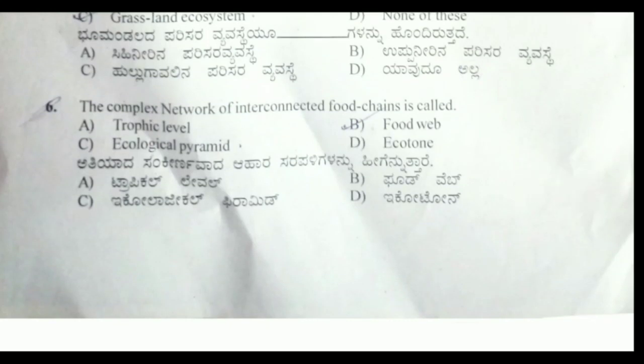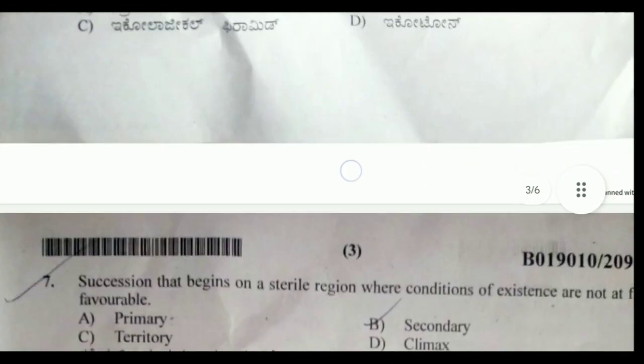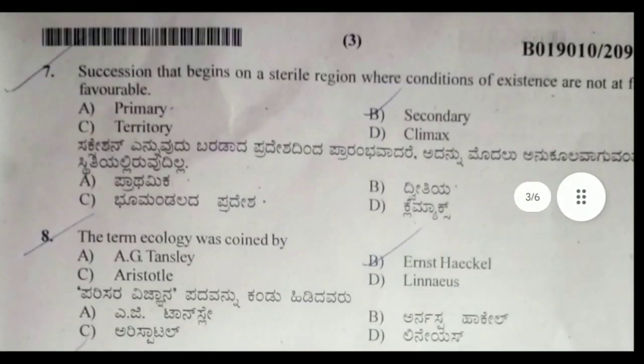Sixth question: the complex network of interconnected food chains is called a food web. Option B is the correct answer.